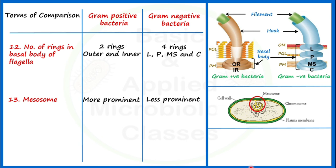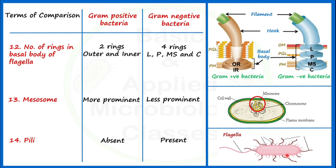Let's see the next point of difference: pili. In gram positive bacteria, pili are absent, and in gram negative bacteria, pili are present. Pili are hair-like appendages — they are thicker than fimbriae and longer than fimbriae but shorter than flagella. Pili have been found to play an important role in gene transfer from one bacterial cell to another.